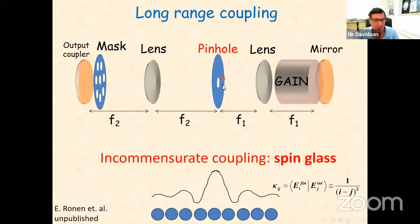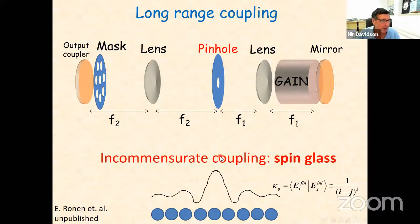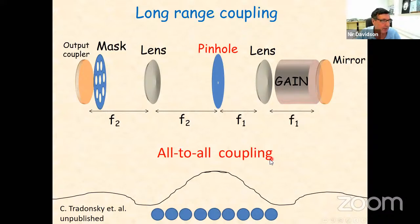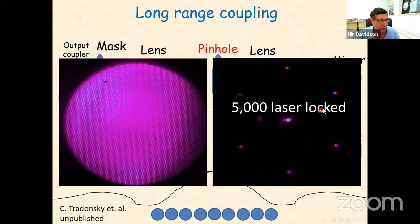With incommensurate pinhole radius, the oscillating coupling function — a power-law decay rather than exponential — is incommensurate with the laser spacing, giving something similar to a random long-range coupling, which is effectively a spin glass. We have interesting results with this system that I don't have time to discuss today. If we close the pinhole to a delta function, this gives all-to-all coupling or mean field — the strongest coupler. With mean-field coupling we achieved a record of more than 5,000 phase-locked coupled lasers.